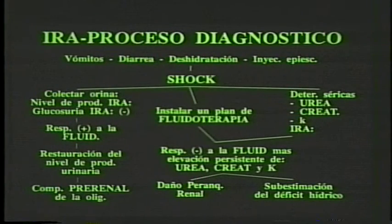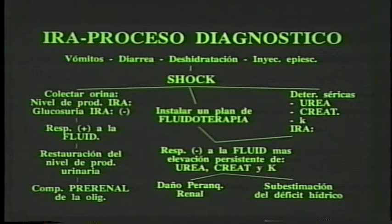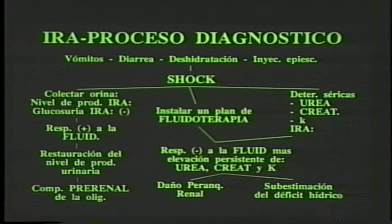Paralelamente debemos extraer sangre para algunas determinaciones sénicas: urea, creatinina y potasio. Los tres van a estar sustancialmente elevados en el fallo renal agudo de tipo oligoanúrico. Quiero hacer aclaraciones en relación a estas tres determinaciones, fundamentalmente en relación al potasio, que en la insuficiencia renal aguda tiene un valor diagnóstico sumamente crítico. Digo esto porque no siempre es fácil diferenciar un insuficiente renal agudo de un insuficiente renal crónico. Los síntomas del insuficiente renal agudo —vómitos, diarrea, deshidratación, inyección episcleral— también se pueden presentar en un insuficiente renal crónico.